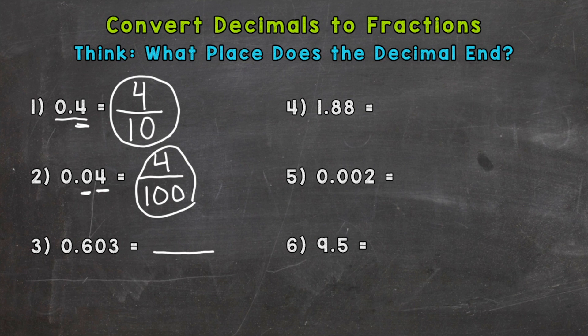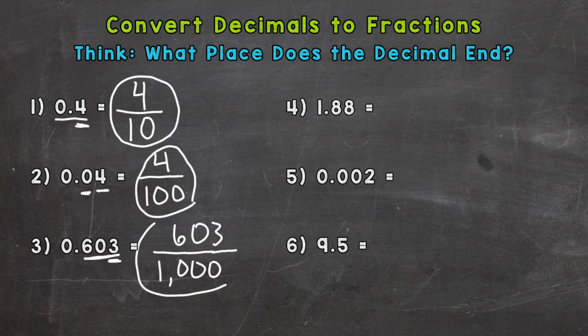Number three: what place does our decimal end? It goes to the thousandths — that three is where it ends. So one thousand is our denominator. The number to the right of the decimal is six hundred three, so we have six hundred three thousandths.